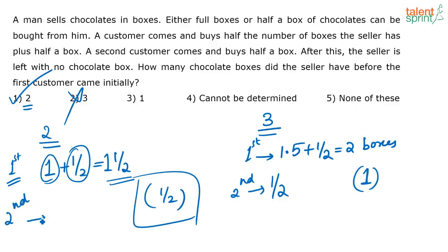A second customer comes and buys half a box — that exact half box remaining. Now the seller has nothing left. That is exactly what the question describes. How many chocolate boxes did the seller have initially? The answer is option 1, that is 2.